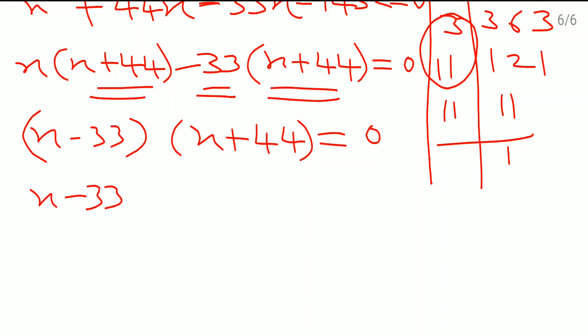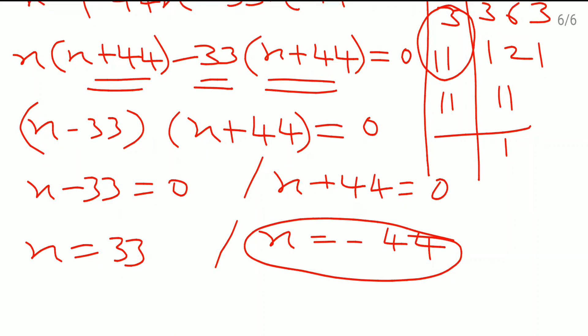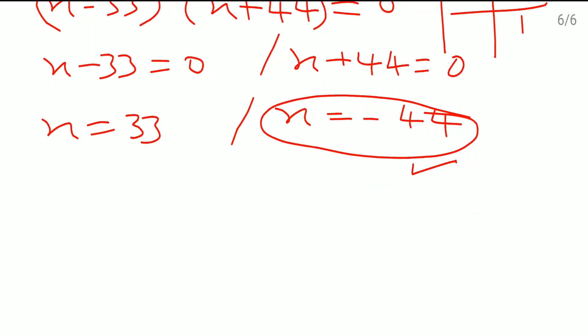x minus 33 which is equal to 0, and x plus 44 which is equal to 0. So x is equal to 33, and here x is equal to minus 44. Now this value came as negative and speed is never negative, so we are not going to consider this value of x.